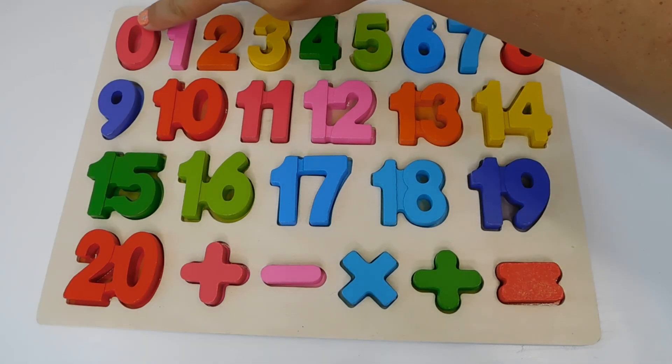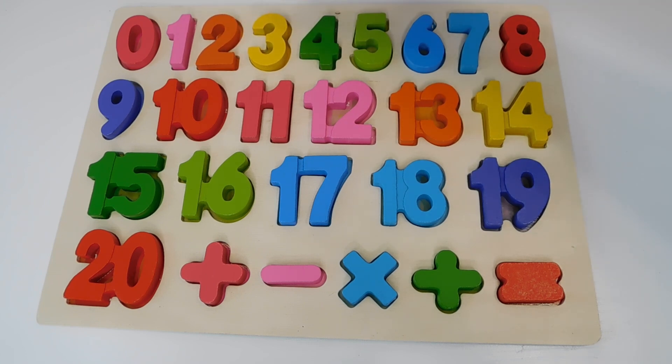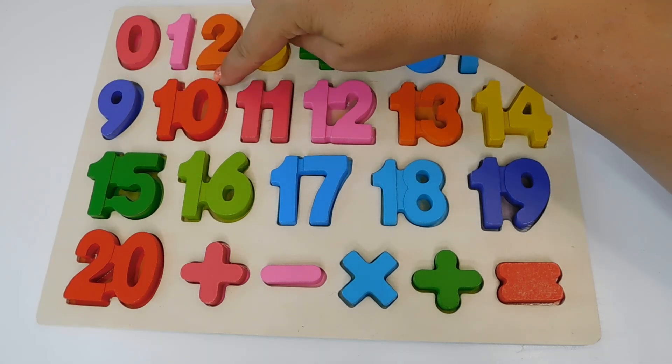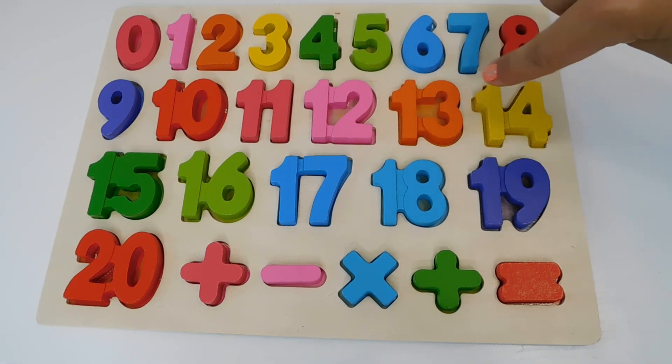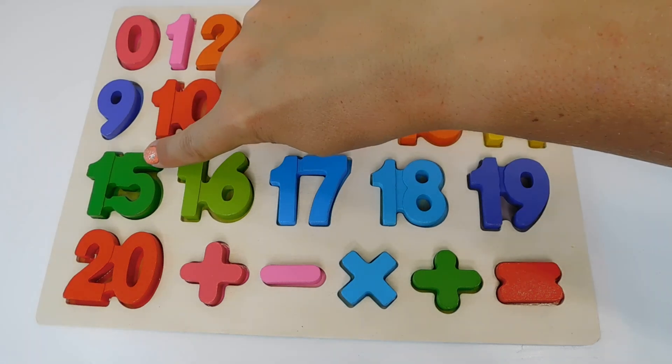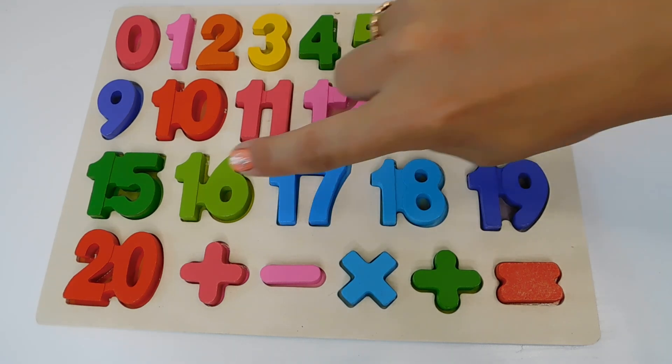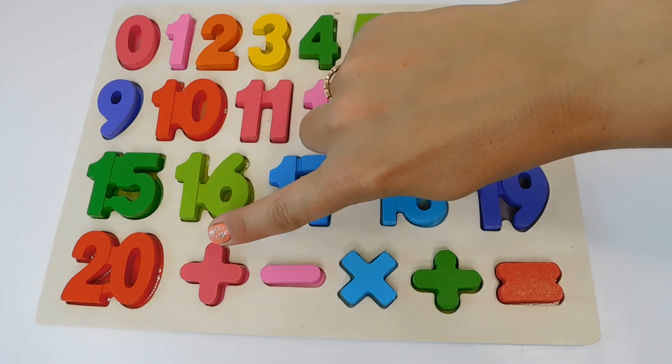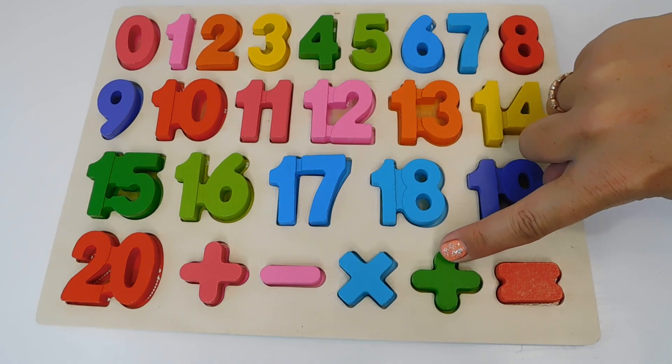Let's learn them all again. 0, 1, 2, 3, 4, 5, 6, 7, 8, 9, 10, 11, 12, 13, 14, 15, 16, 17, 18, 19, 20. Plus. Minus. Multiplier times. Divided. Equal.